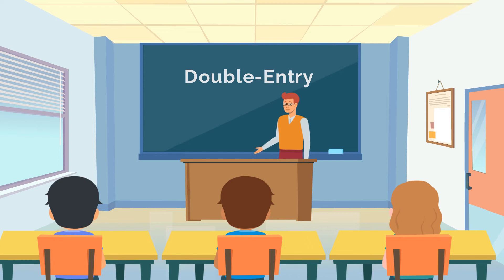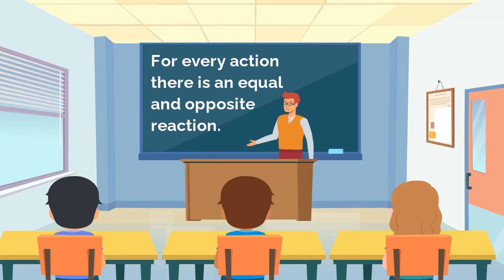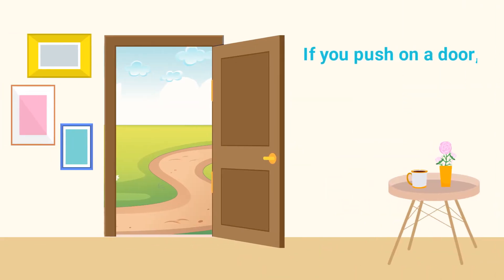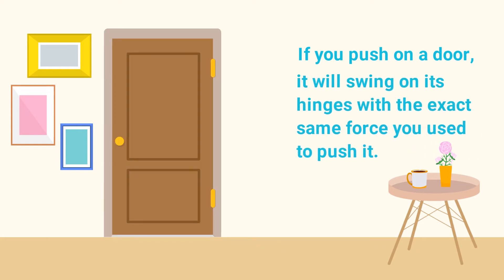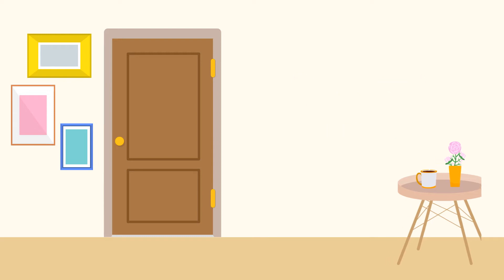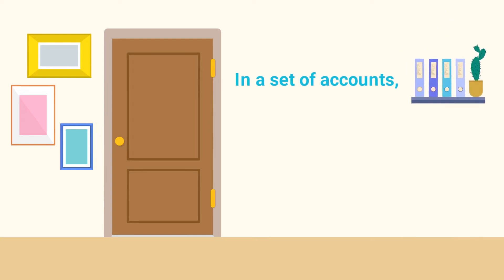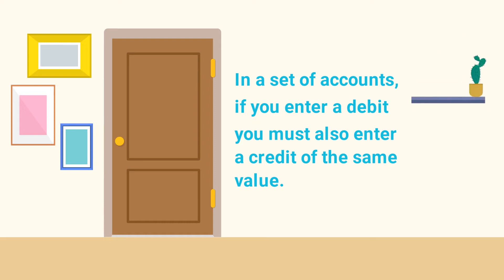The double-entry accounting system is a bit like Isaac Newton's third law of physics. For every action, there is an equal and opposite reaction. If you push on a door, the door will swing on its hinges with the exact same force you used to push it — this is an equal and opposite reaction. Likewise, and as you learned earlier in this series, in a set of accounts, if you enter a debit, you must also enter a credit of the same value.